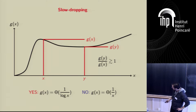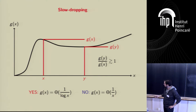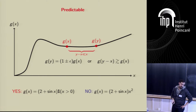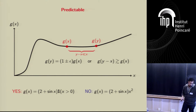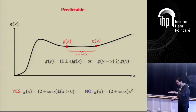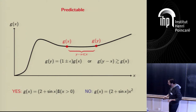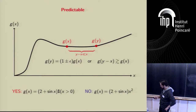But identifying heavy hitters is only part of the game — we also have to approximate their frequencies. I gave a condition on the increase of the function and a condition on the decay. The third condition is about local variability, which comes in two parts. The first part is very natural and the second part is not natural, at least the first time you see it. We'll call this 'predictability.'